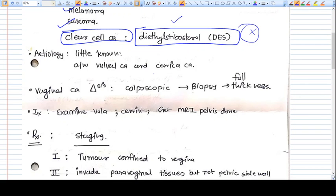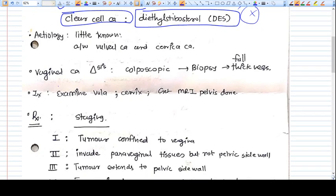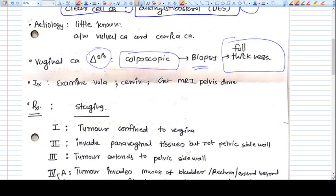How do you diagnose? Symptoms include watery discharge and vaginal bleeding. You'll perform colposcopic examination or per speculum examination to see any mass. Once you suspect carcinoma or tumor, you do a full thickness biopsy.